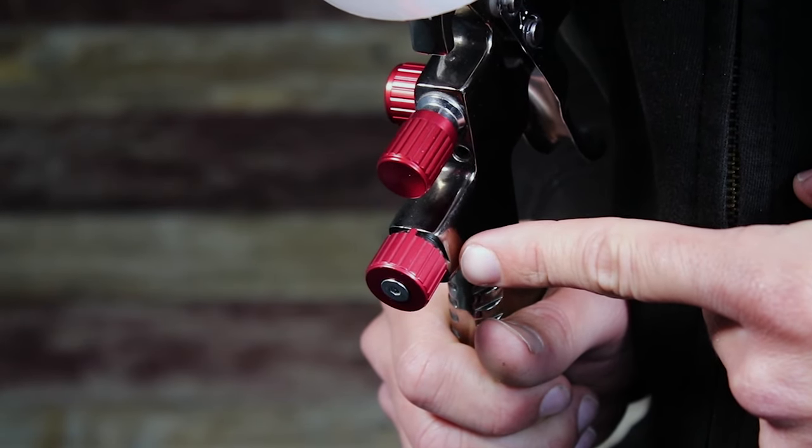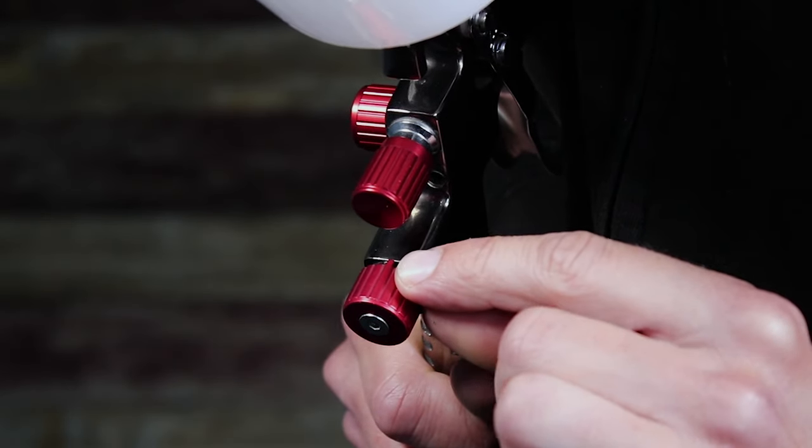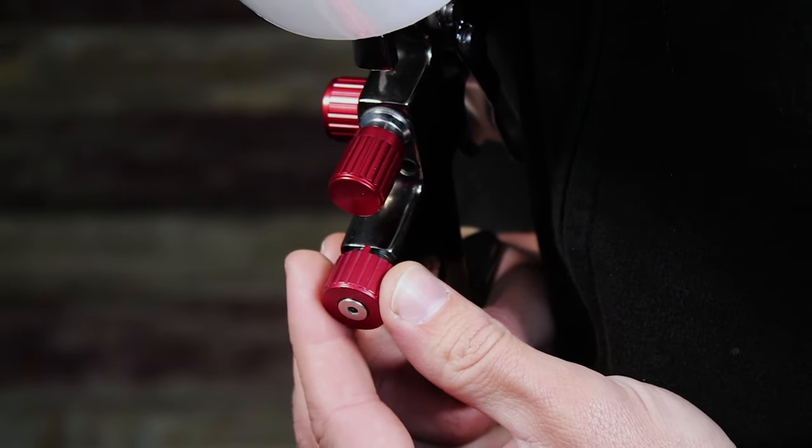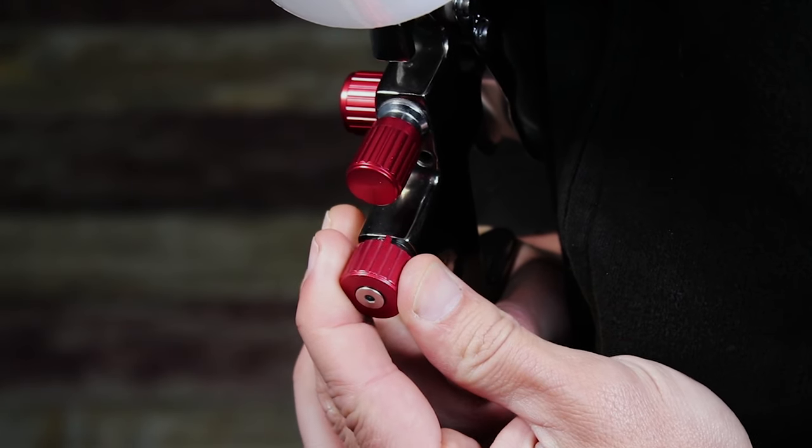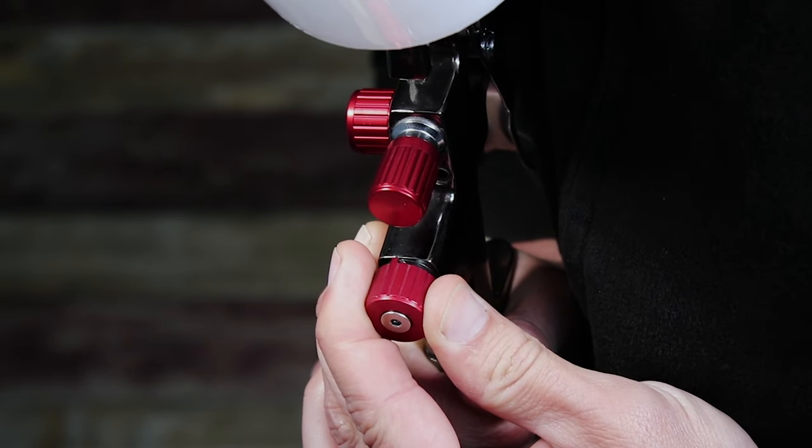Here we have the air pressure adjustment on the GTR 500. In this instance, fully open is when the tab is in the middle or 12 o'clock position. This will allow maximum air through the gun. Turning it either clockwise or anti-clockwise from the middle position will throttle the air pressure down.